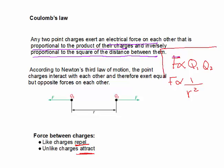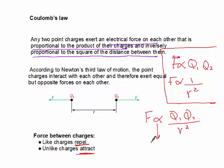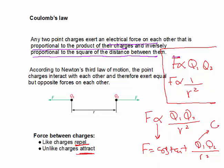From these expressions we get Coulomb's law: F is proportional to Q1 times Q2 over R squared. We replace the proportionality sign with a constant, so F equals a constant times Q1 Q2 over R squared. The unit for charge is the Coulomb, the unit for R is the meter (SI unit), and therefore the force is measured in Newtons.